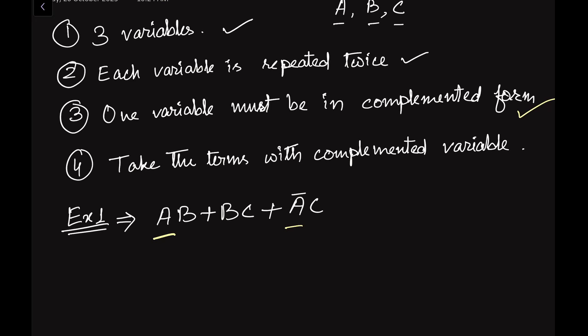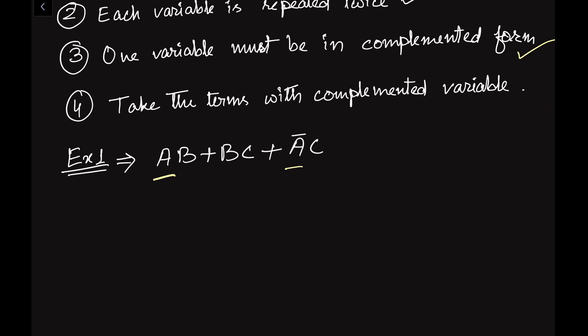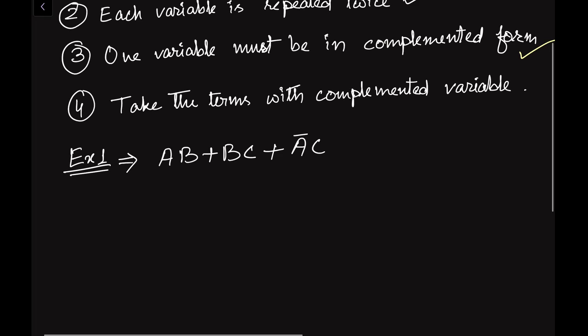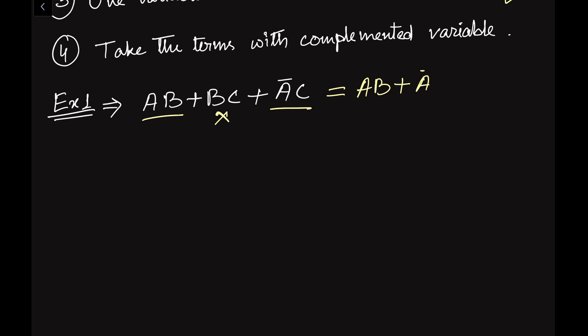Now we apply the Consensus Theorem. Take the terms with the complemented variable and discard the remaining terms that do not contain it. Here A is in complemented form, so we keep the terms containing A: AB and ĀC. We discard BC. The result is AB + ĀC. We can remove the redundant term BC.